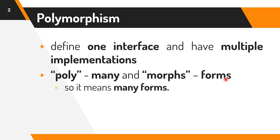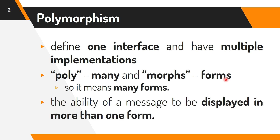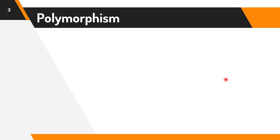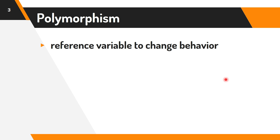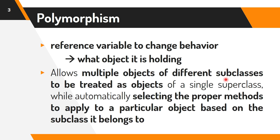Therefore, it means many forms. In simple words, we can define polymorphism as the ability of a message to be displayed in more than one form — the ability of a reference variable to change behavior according to what object it is holding. It allows multiple objects of different subclasses to be treated as objects of a single superclass, while automatically selecting the proper methods to apply to a particular object based on the subclass it belongs to.